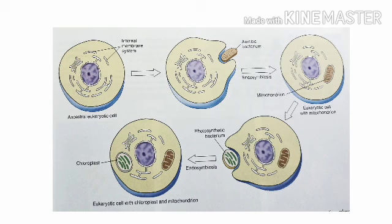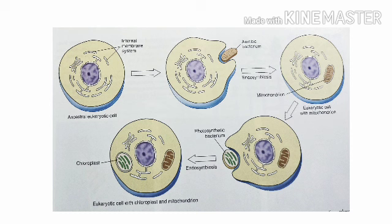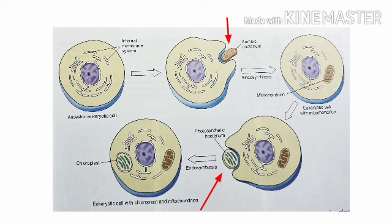Symbiosis is a close relationship between organisms of different species that live together. There is a theory called the theory of endosymbiosis that proposes that some of today's eukaryotic organelles evolved by a symbiosis in which one species of prokaryote was engulfed by another, where the engulfed prokaryote started providing the host with certain advantages associated with its special metabolic activities. This resulted in a symbiotic relationship in which both were benefited, and the engulfed prokaryote eventually became the organelle.